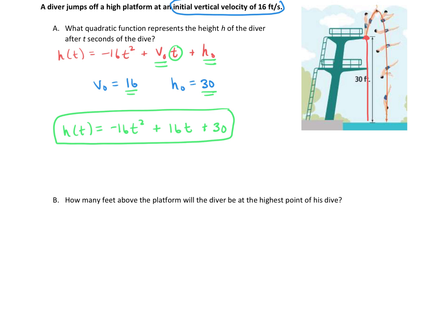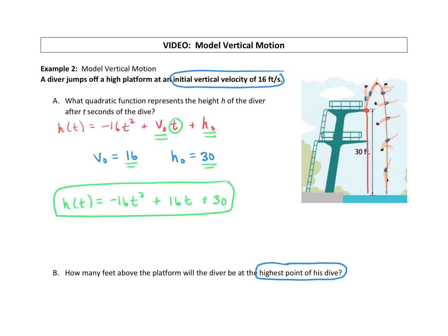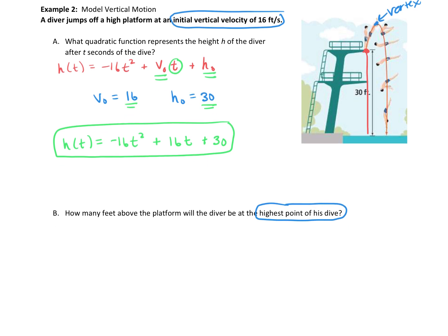For Part B, how many feet above the platform will the diver be at the highest point of his dive? Looking at the picture, this is the highest point before he comes back down — the parabolic shape. That highest point is the vertex of the parabola. So to find the highest point of his dive, we have to find the vertex. Anytime you're asked about highest point or maximum, it all comes from the vertex. Our function is in standard form.